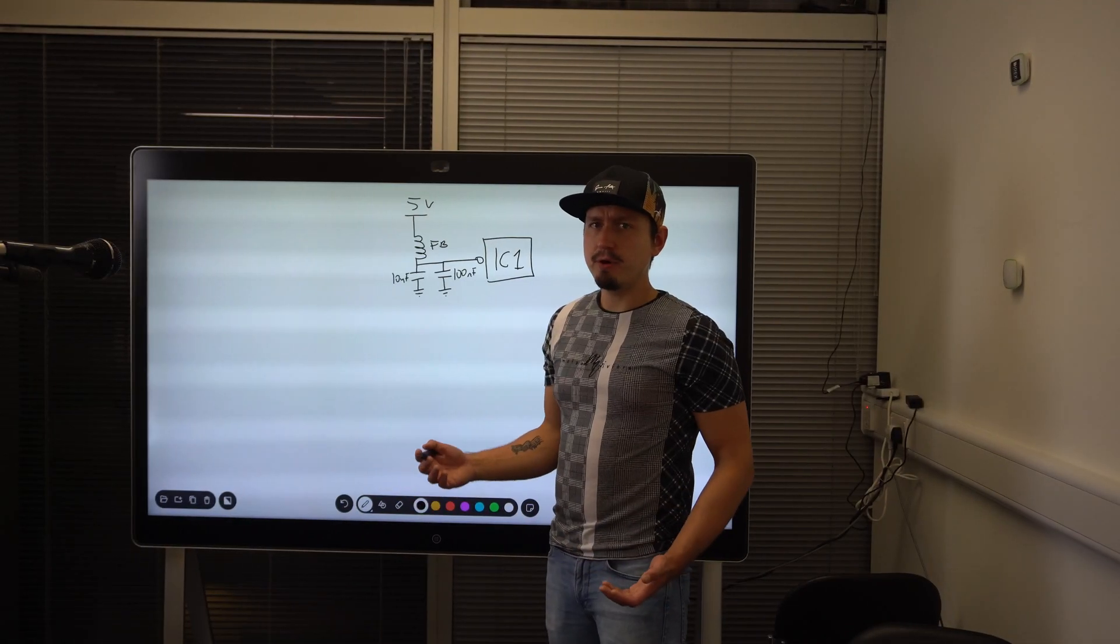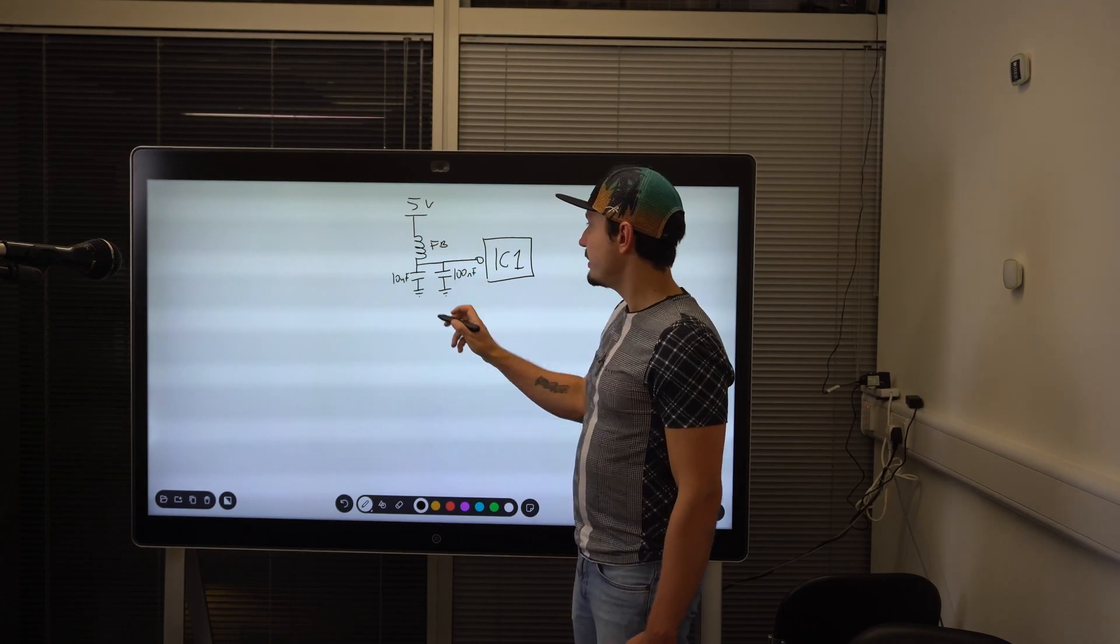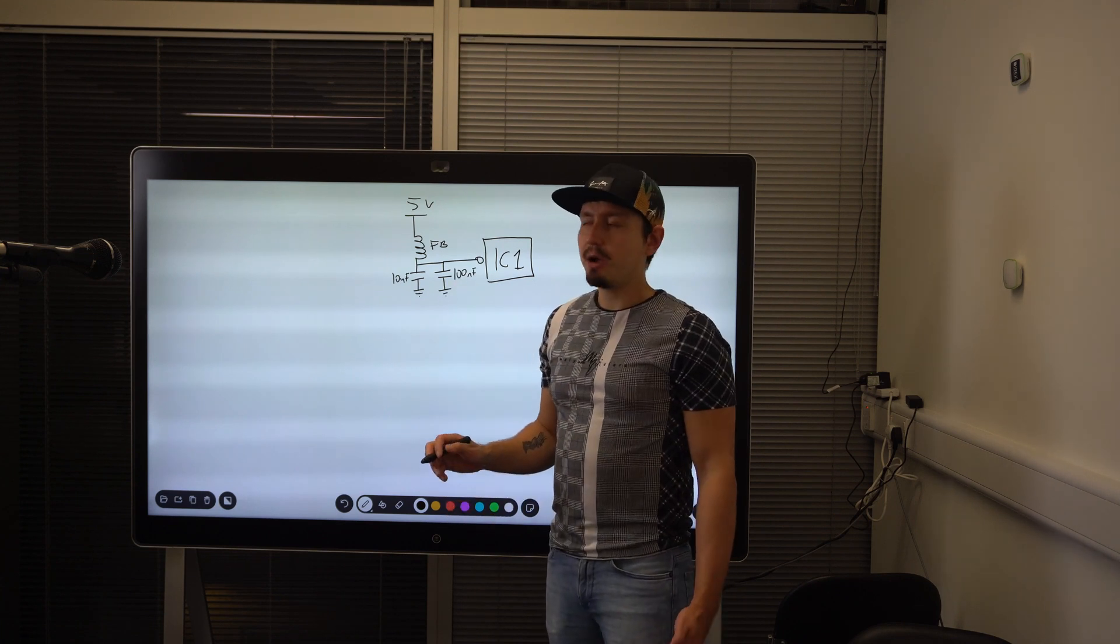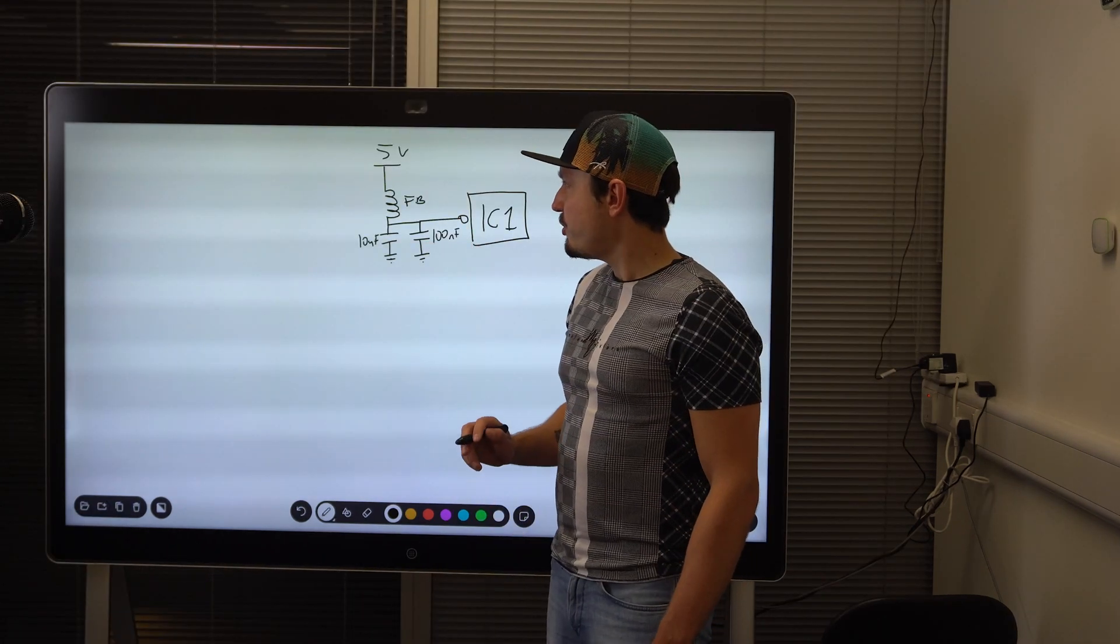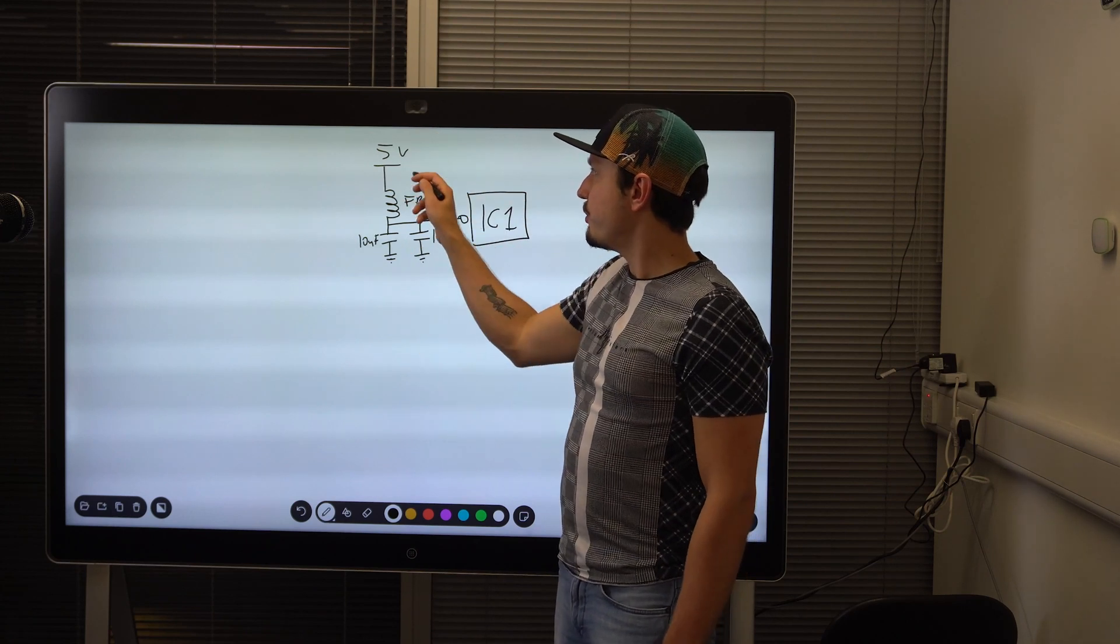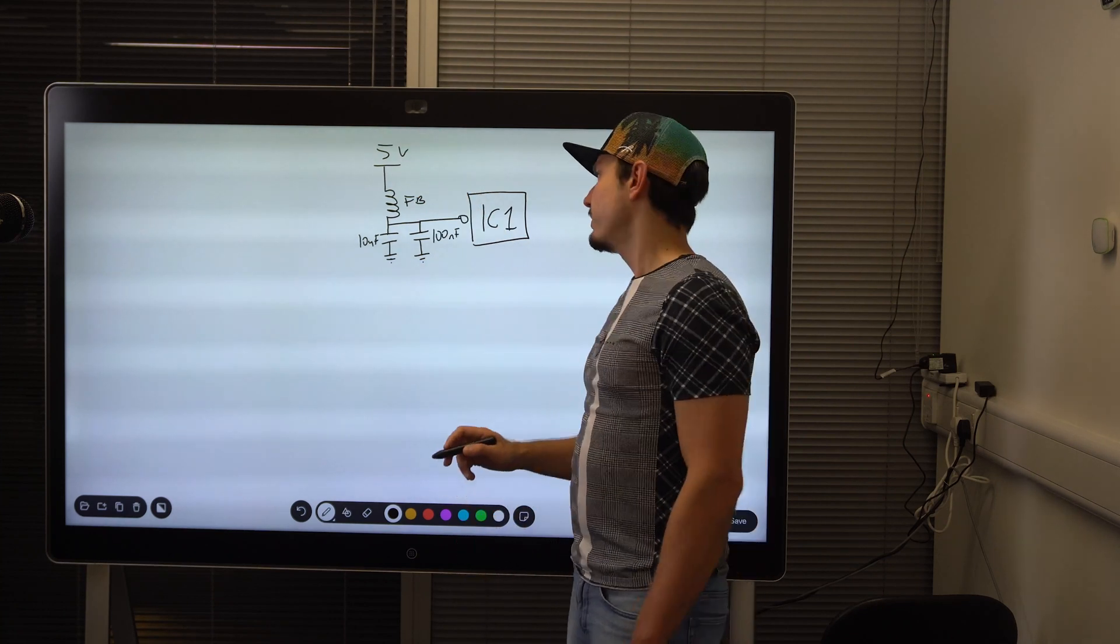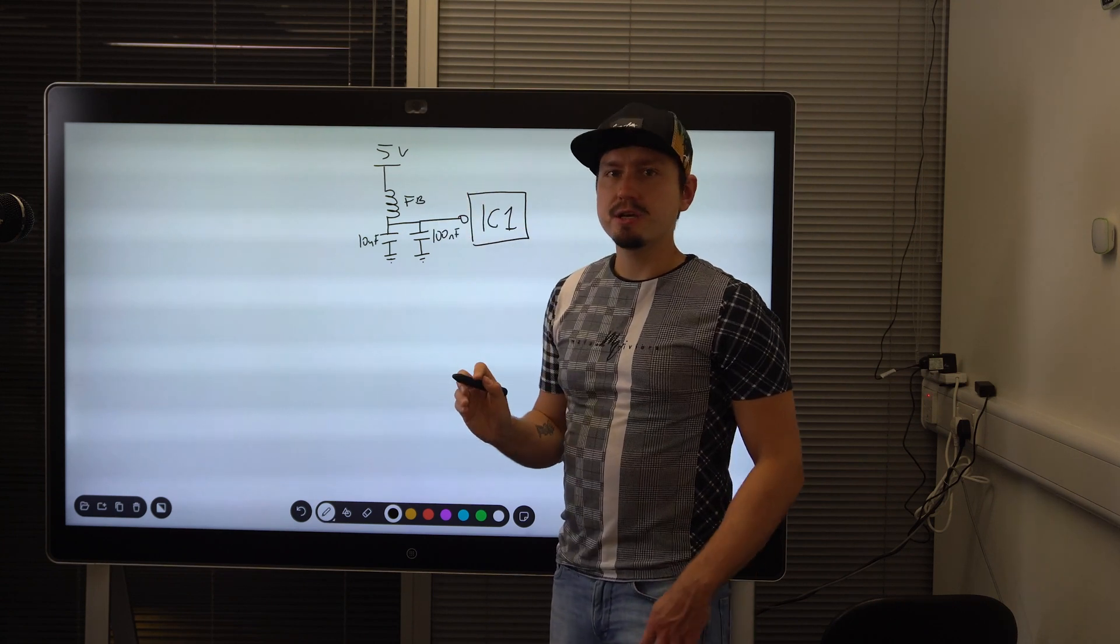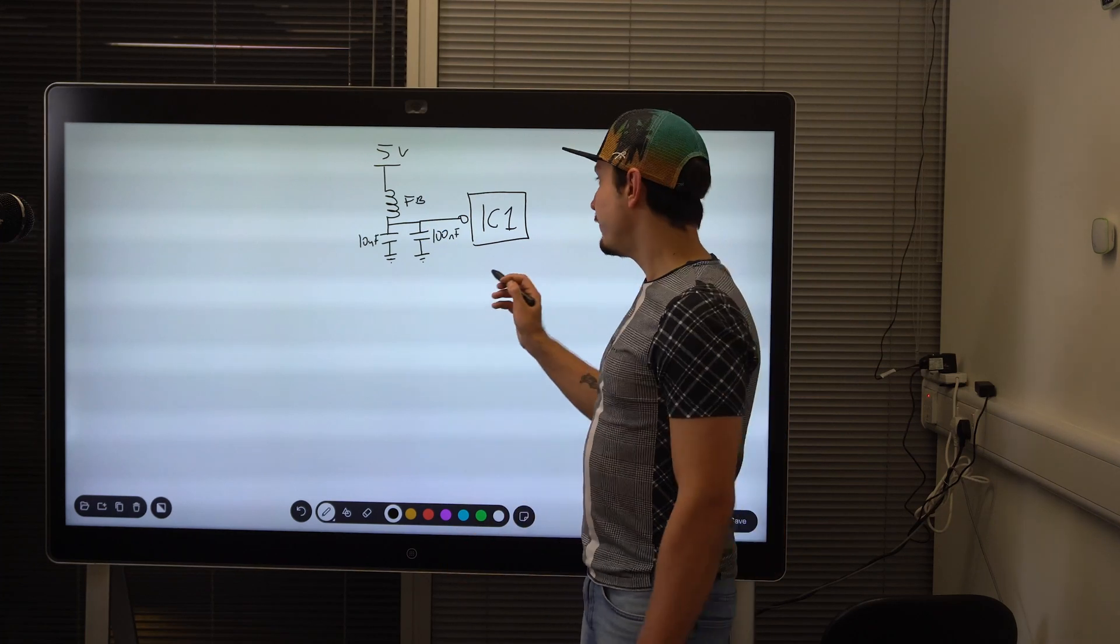What I typically have for every power supply is a ferrite bead on its input and 10 microfarad cap and a 100 nanofarad cap next to the power supply input pin. So the point of this is that first of all we filter out the noise coming into the IC from the power supply. Secondly, we filter out the noise coming from the IC back into the power supply.